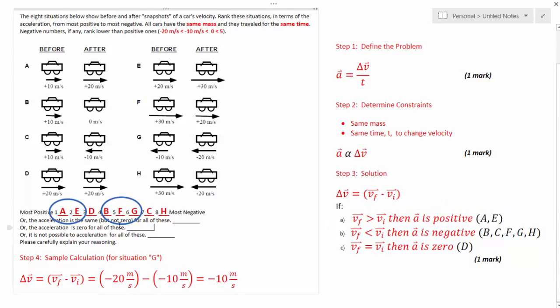So you can see that I've ranked them from the most positive to the most negative. And I've also circled the ones that are tied. So a and e are the same, they're the most positive, but they give the same answer as are b, f, and g.